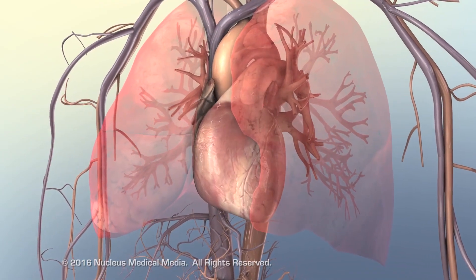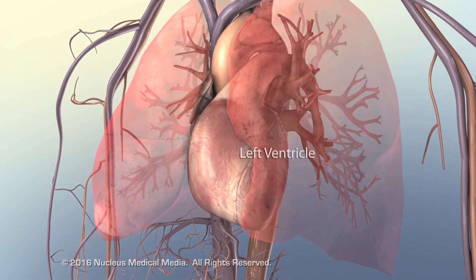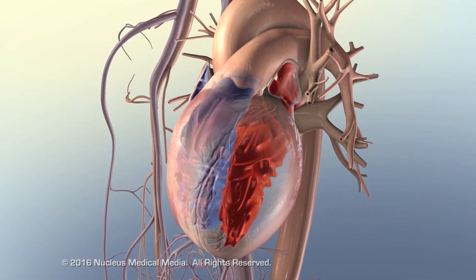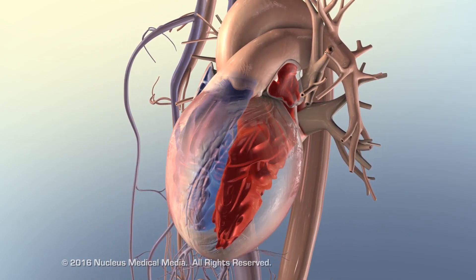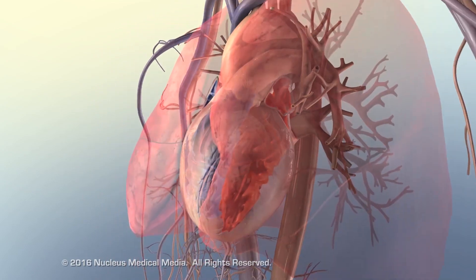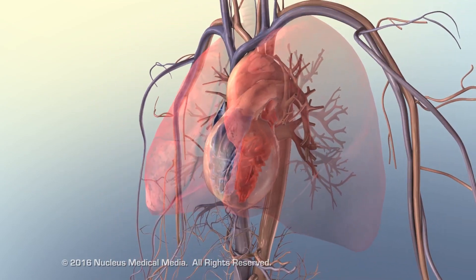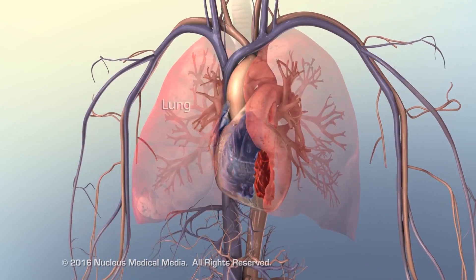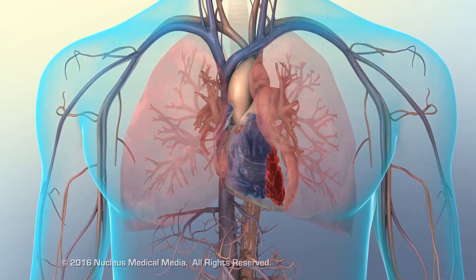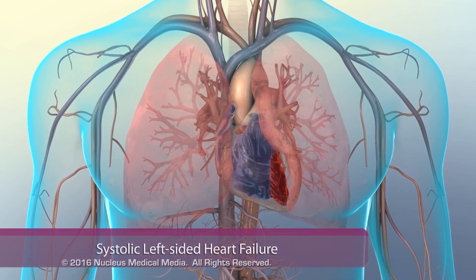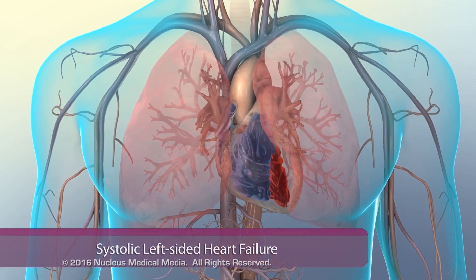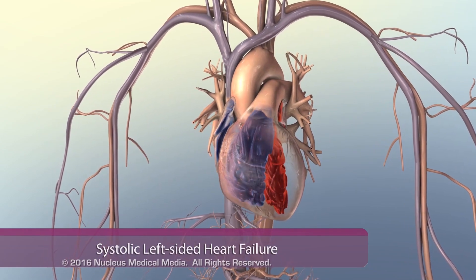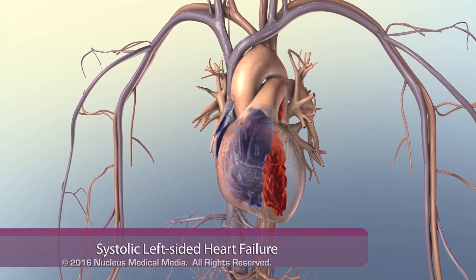In left-sided heart failure, the left ventricle cannot pump an adequate amount of blood — a volume known as preload — out of the heart. This condition causes pulmonary congestion; a buildup of blood in the pulmonary vessels causes fluid in lung tissues that impedes normal respiration. Systolic left-sided heart failure describes the left ventricle's inability to contract with enough force to drive blood out of the heart.